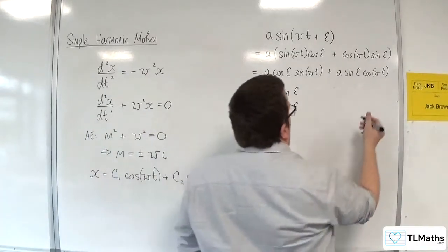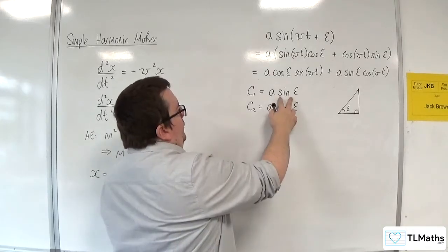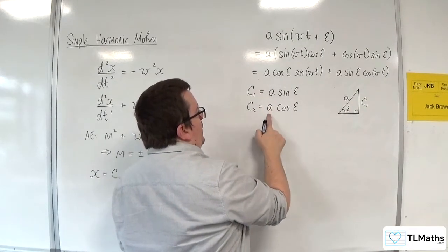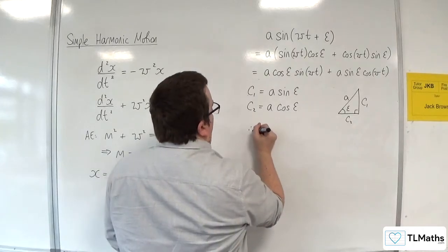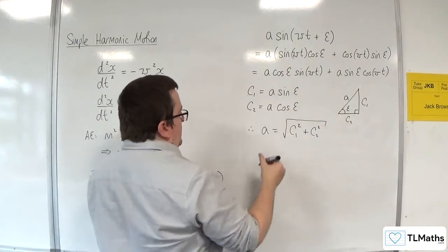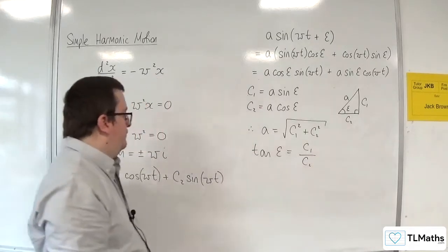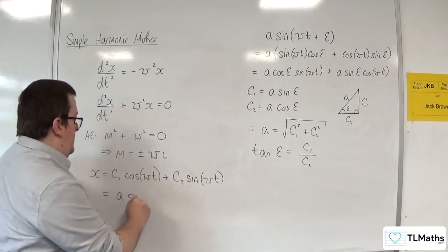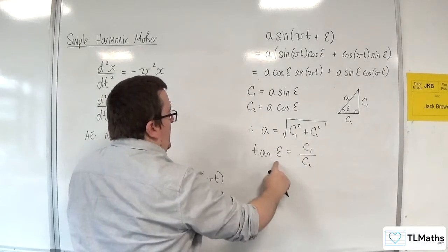Now if you were to draw a right-angled triangle where your angle is epsilon, then sin(ε) = c₁/A — so that's c₁, that's A — and cos(ε) = c₂/A, so that's c₂, the adjacent side. Therefore, A equals the square root of c₁² plus c₂², and tan(ε) equals c₁ over c₂. So we can write this as A·sin(ωt + ε), where A is that and tan(ε) is that.